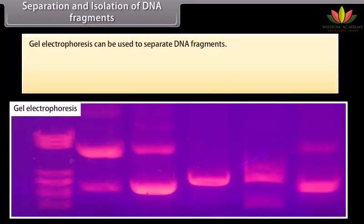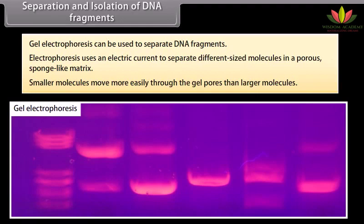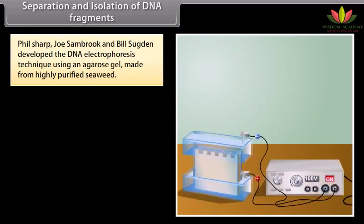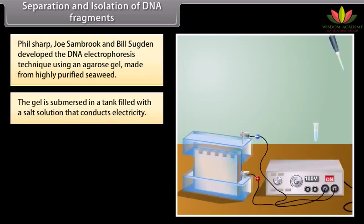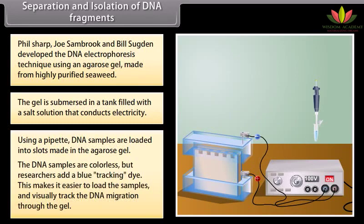Separation and isolation of DNA fragments. Gel electrophoresis can be used to separate DNA fragments. Electrophoresis uses an electric current to separate different-sized molecules in a porous, sponge-like matrix. Smaller molecules move more easily through the gel pores than larger molecules. Phil Sharp, Joe Sambro, and Bill Sajjan developed the DNA electrophoresis technique using an agarose gel made from highly purified seaweed. The gel is submerged in a tank filled with a salt solution that conducts electricity. Using a pipette, DNA samples are loaded into slots made in the agarose gel. The DNA samples are colourless, but researchers add a blue tracking dye.